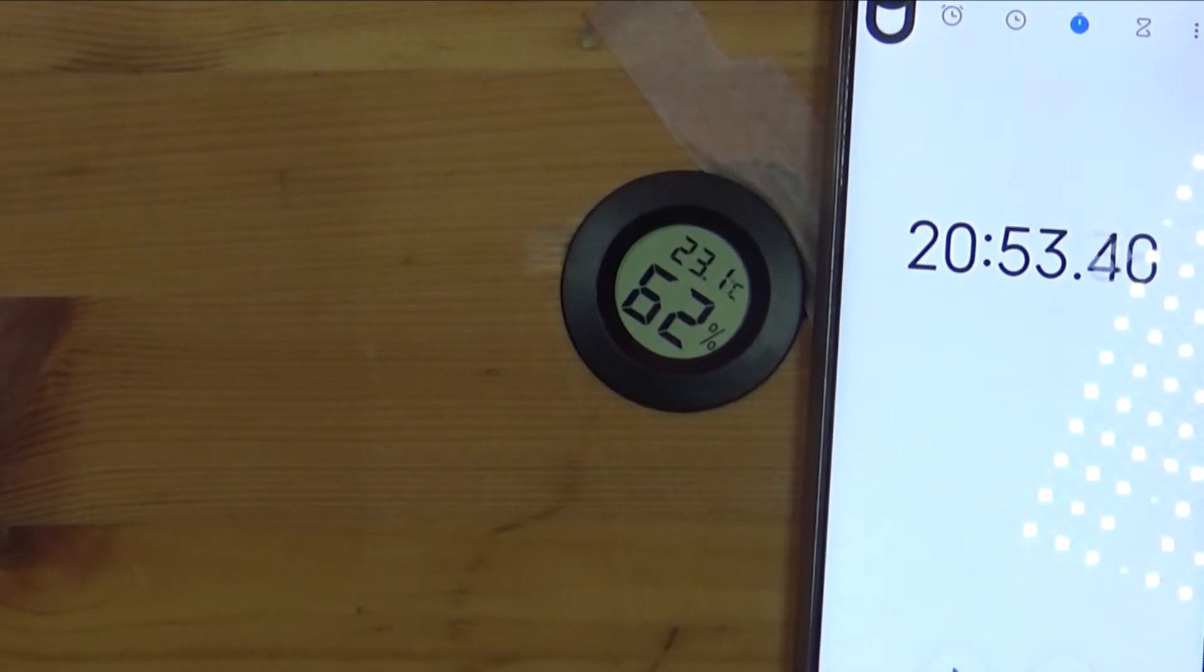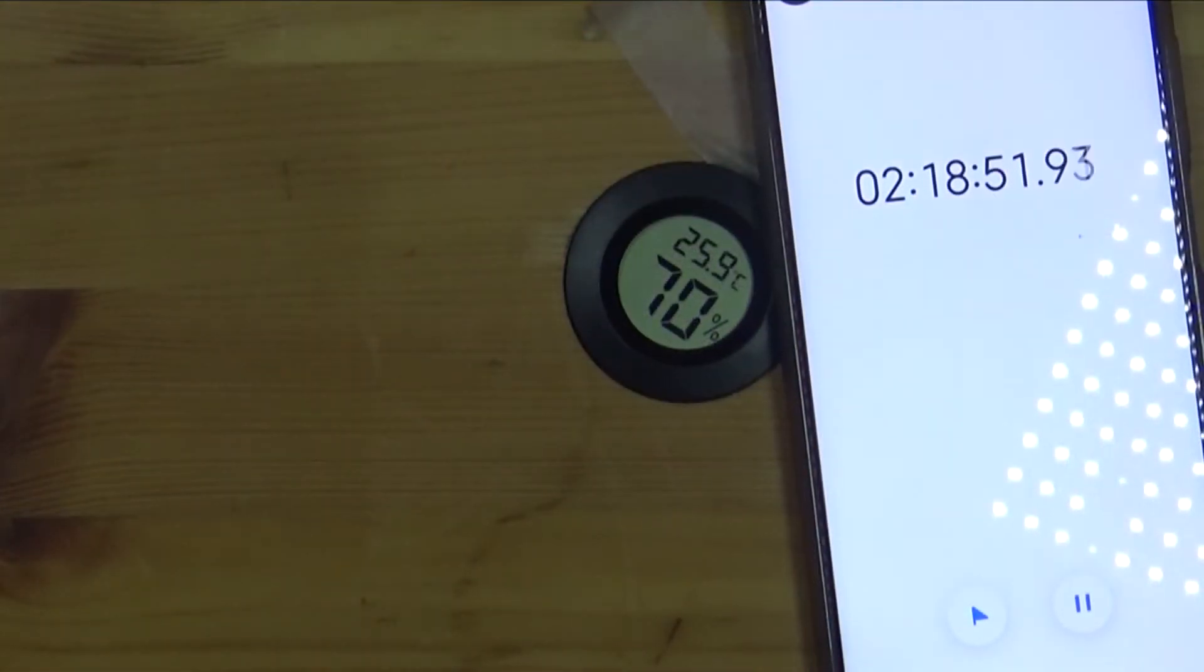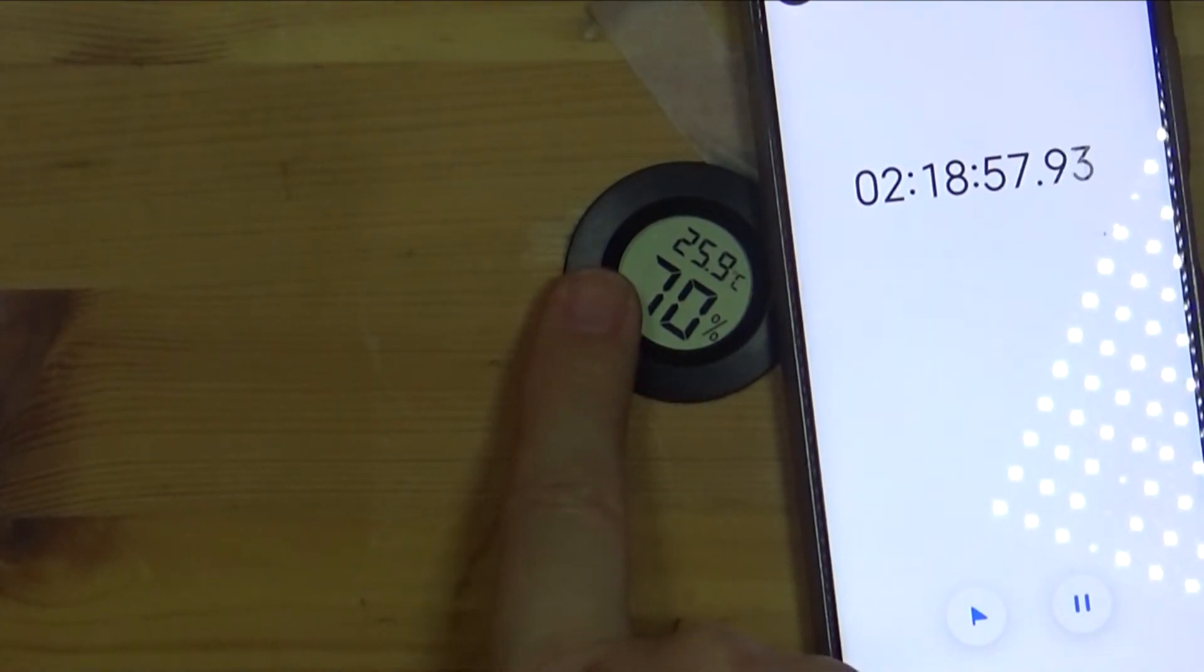It's been about 20 minutes and we're up a degree-ish and we're up to 62% humidity. I still won't put the fan on yet. It's on 70% humidity and 25.9 degrees so it's gone up significantly. I'm going to leave it a little bit longer just to make sure it's definitely doing what I want, then I will shove the fan on.